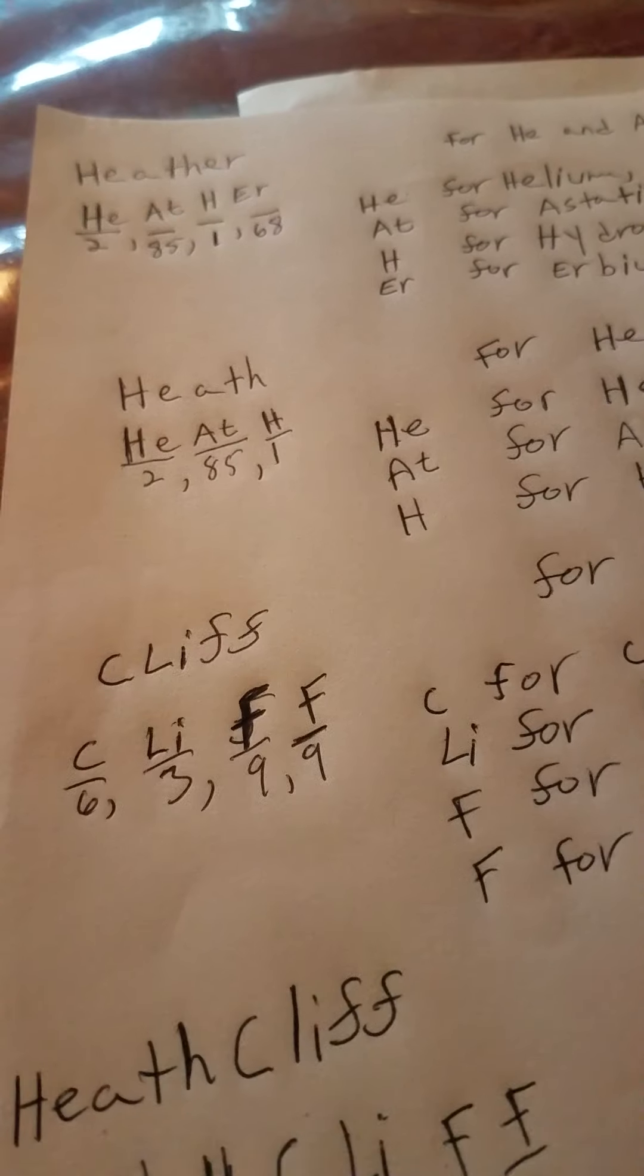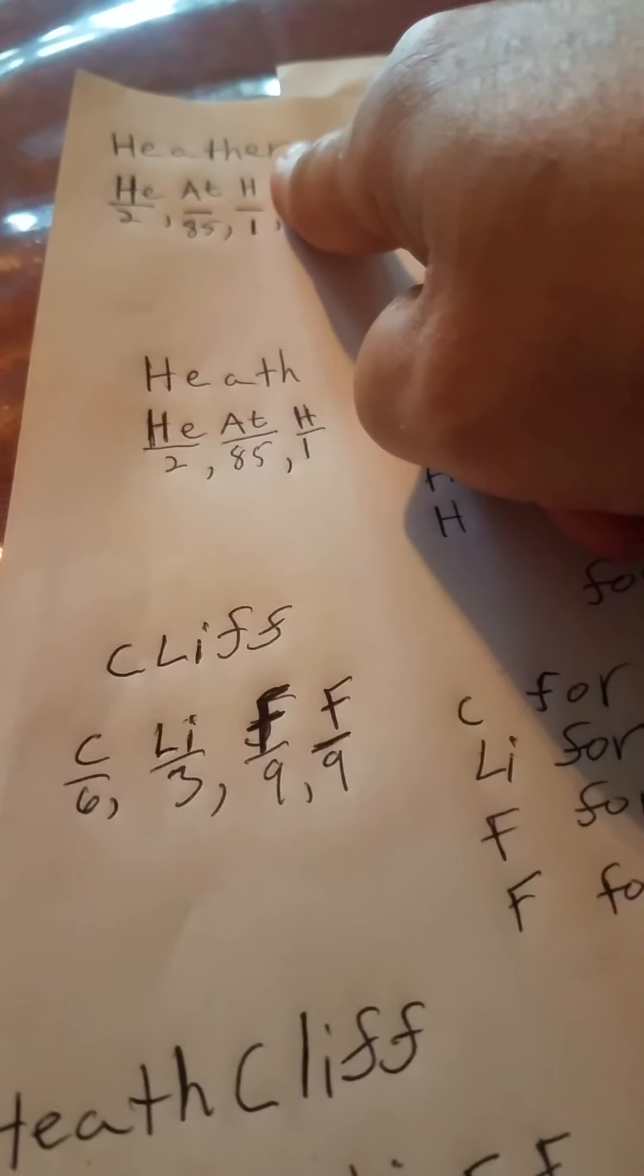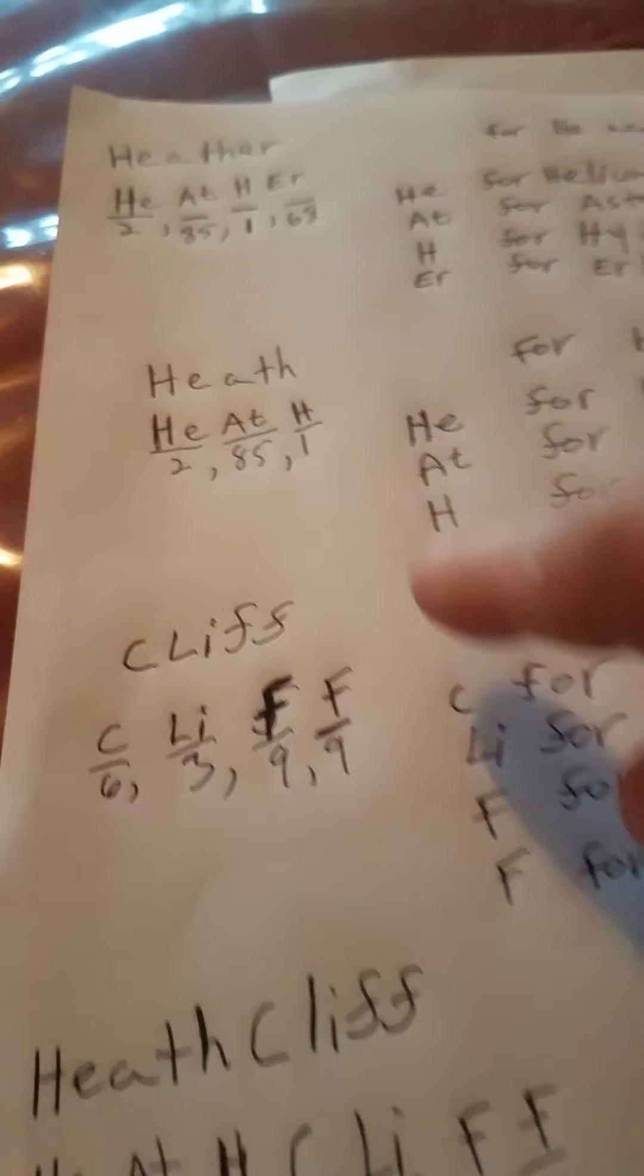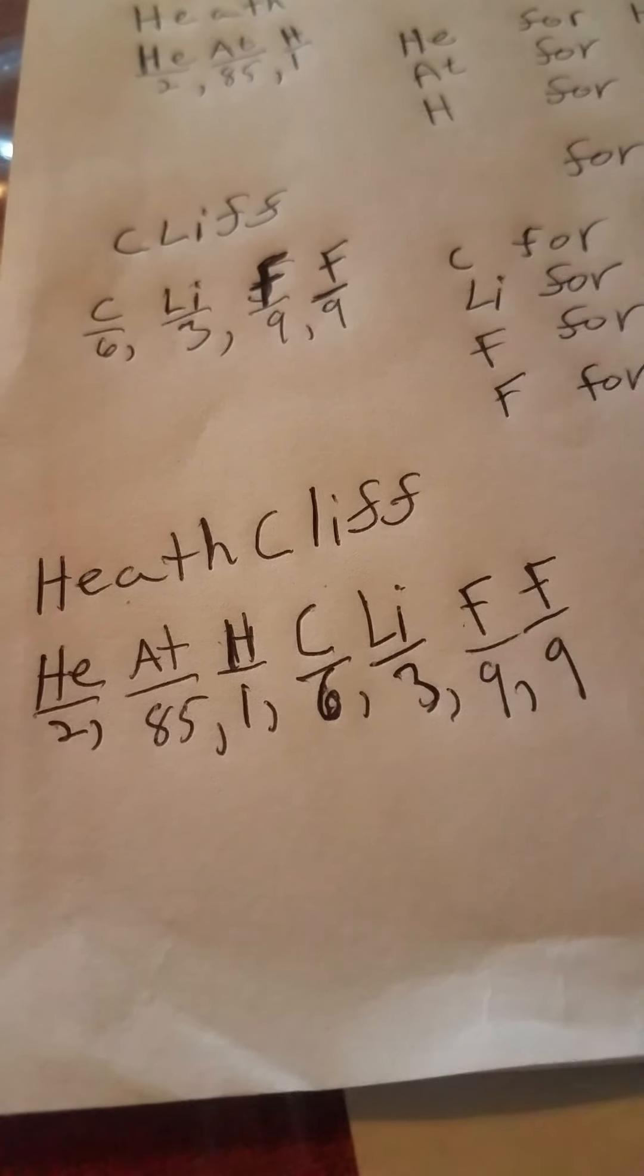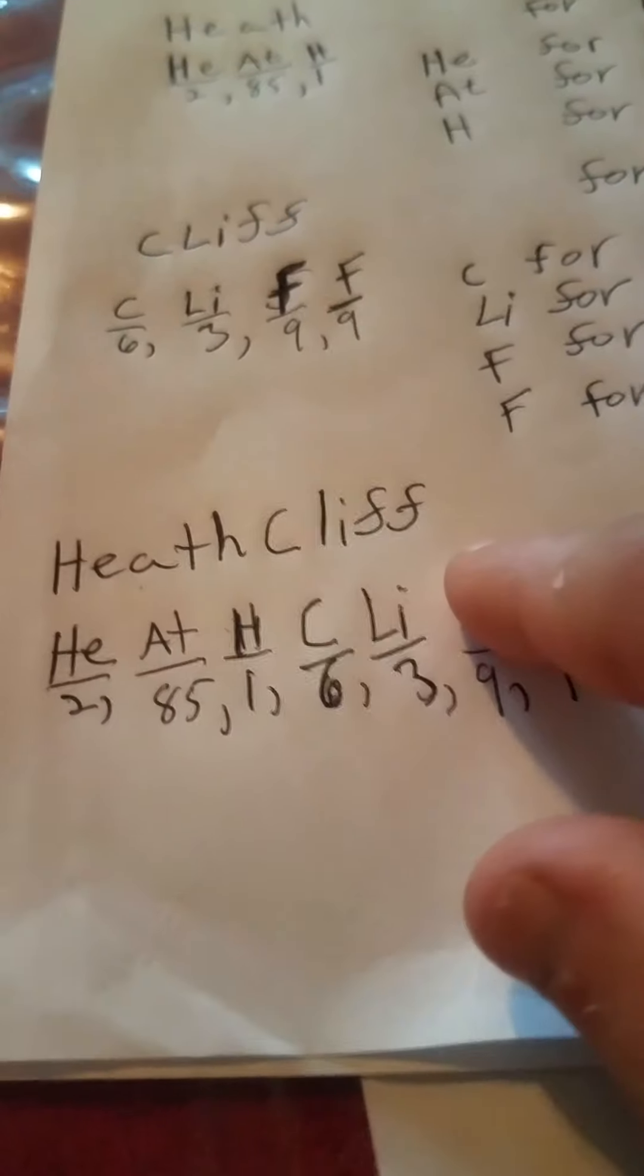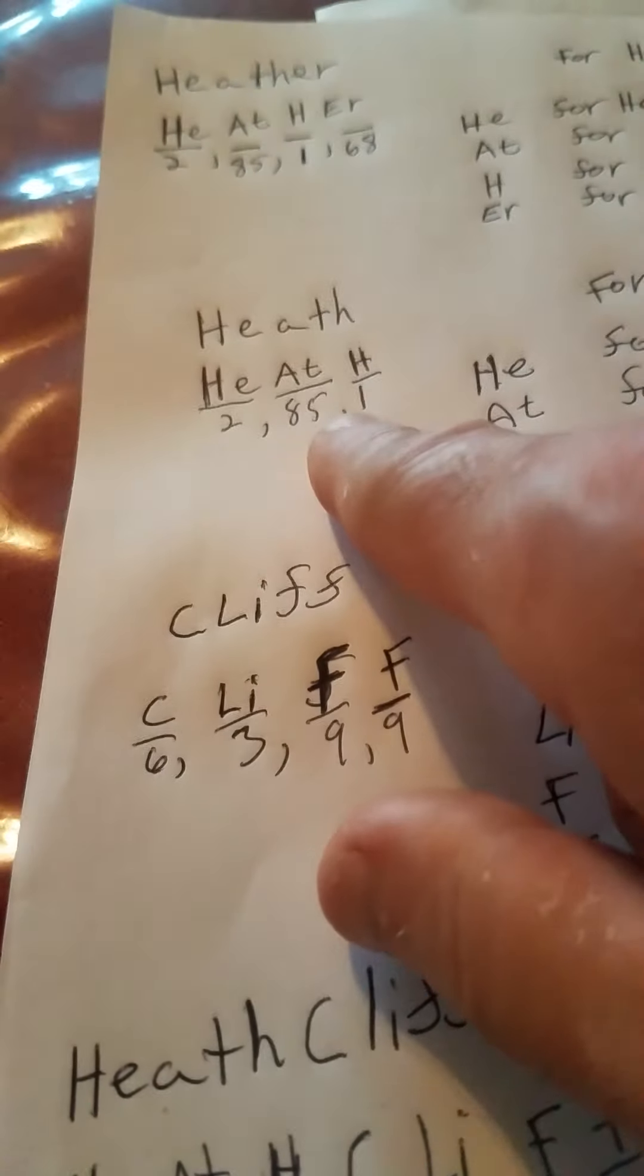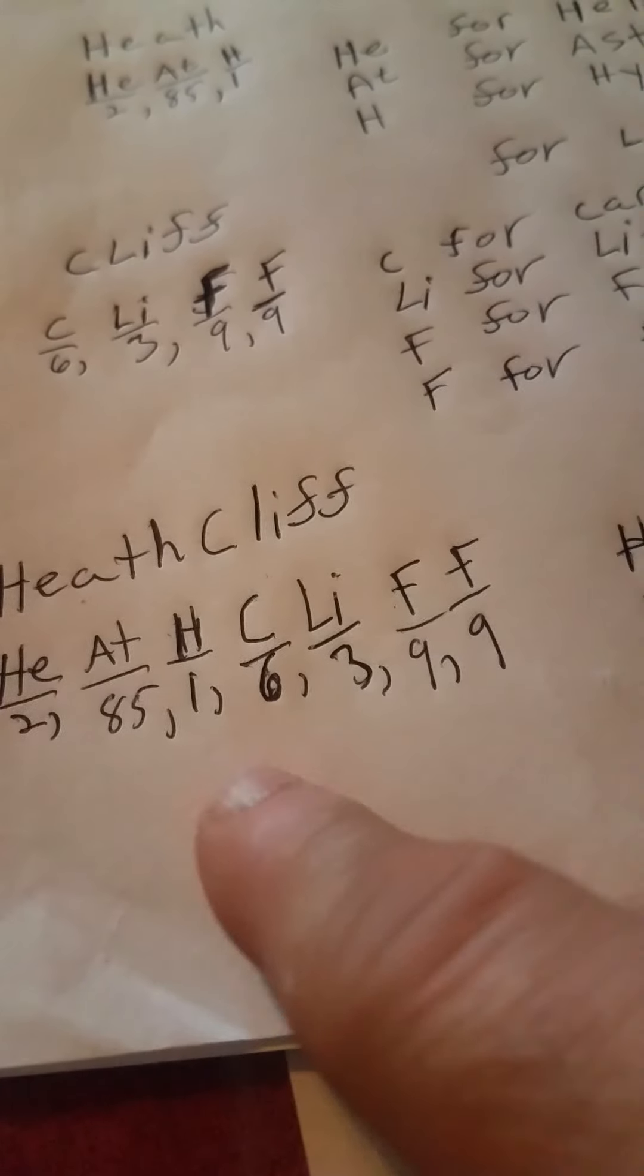But then I did something different. I took Heath. Yeah, I took away the E-R from Heather. See that? I got Heath. See Heath right here? And I got Cliff. And I got the name Heathcliff, like the cat, or that person in the novel. Heathcliff, the character of the novel. Heathcliff. I put them together. So, I got the two, 85 and one. Two, 85 and one. And I got the six, three, nine, nine. Put them together. Six, three, nine, nine. Nine, nine. And I got Heathcliff.